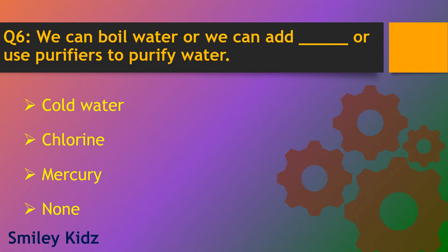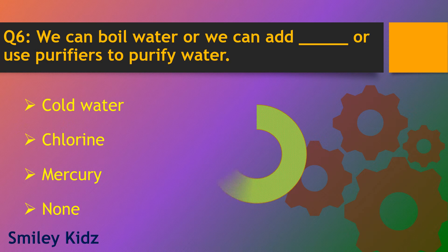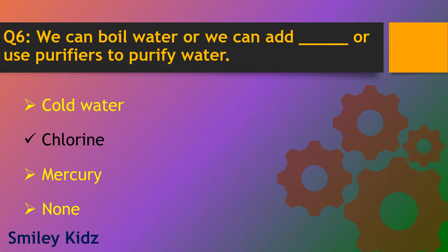Question number 6. We can boil water or we can add dash, or use purifiers to purify water. Options are cold water, chlorine, mercury and none. The right answer is chlorine.